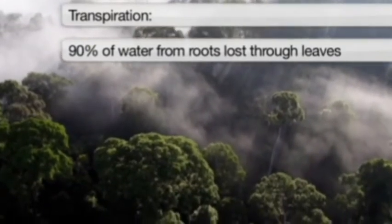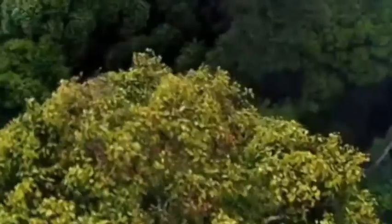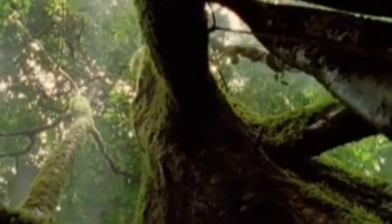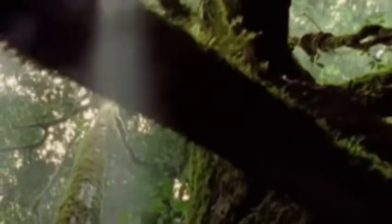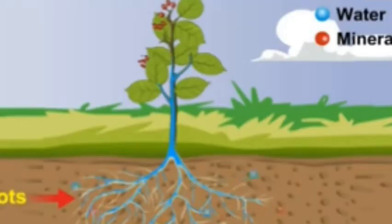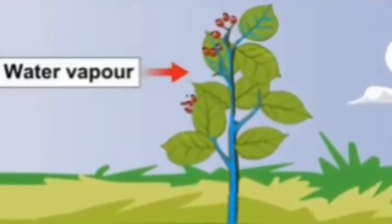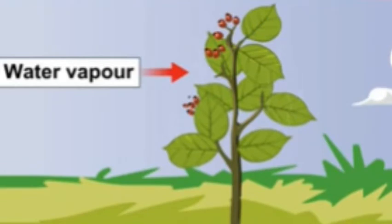By the process of transpiration, 95% of the water absorbed by roots is lost through transpiration. The evaporation of water from leaves generates a suction pull which pulls the water to great heights in tall trees.